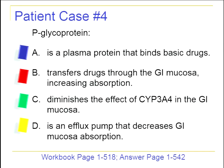Question four on page 518: what statement best describes P-glycoprotein? Options: P-glycoprotein is a plasma protein that binds basic drugs; it transfers drugs through the GI mucosa increasing absorption; it diminishes the effect of CYP3A4 in the GI mucosa; or it is an efflux pump that decreases GI mucosal absorption.